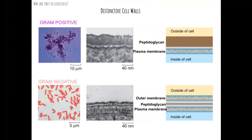One of the reasons that prokaryotes have been so successful is that they have cell walls, which protect the bacterial cells from things outside of the cell. There are two distinct types of cell walls in bacteria. The first has a thick layer of peptidoglycan on the outside with a thinner layer of plasma membrane inside. The second type has an outer membrane, followed by a thin layer of peptidoglycan, and then a plasma membrane inside of that.